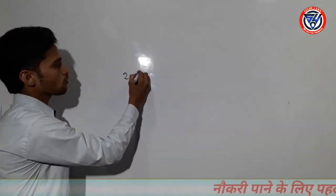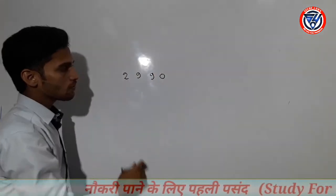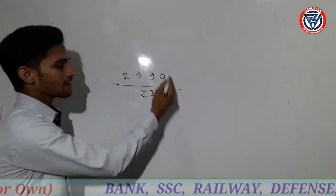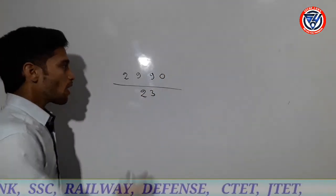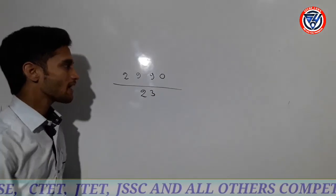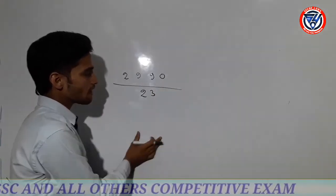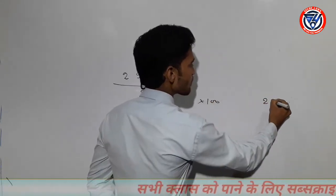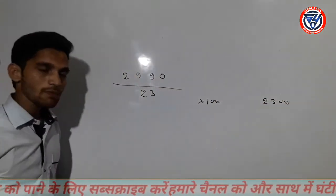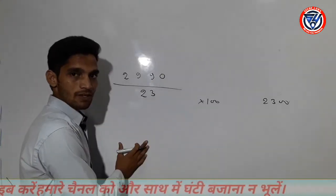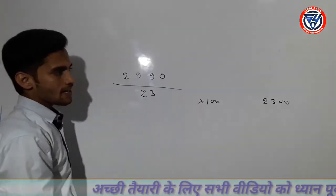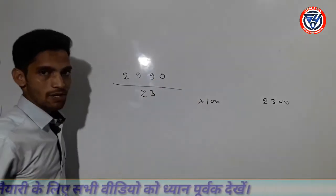Let's go. Let's take another number — 2, 9, 9, 0, that is 2990. If I divide it by 23 — we don't know the full table of 23. It's 23. If you divide 2990 by 23, how much will it be? We need to prepare for the hundreds. 23 into 100 is 2300. We have done all the times and that is it.